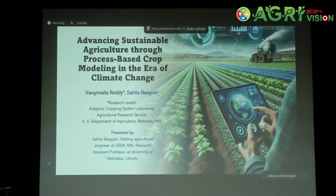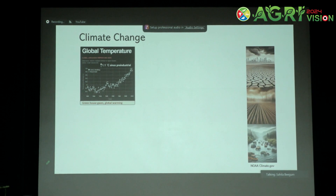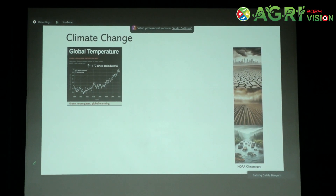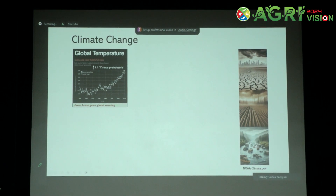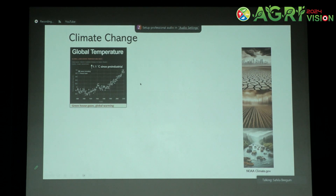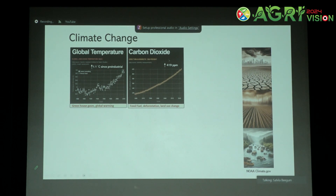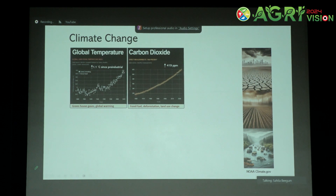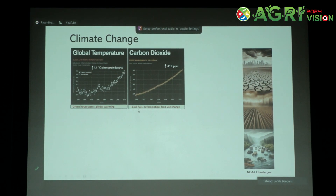Let me start with the climate change term itself. Climate change refers to the evident long-term change in climate patterns. If we look at the global temperature variation over the years, there is an increase of 1.1 degree Celsius since the pre-industrial level. This is mainly due to the increased amount of greenhouse gases that have resulted in global warming. If you look at carbon dioxide, this graph shows an increase in CO2 from 1960 to 2020 — from 320 ppm to currently around 420 ppm. This is due to the increase in fossil fuel usage, deforestation and land use changes.